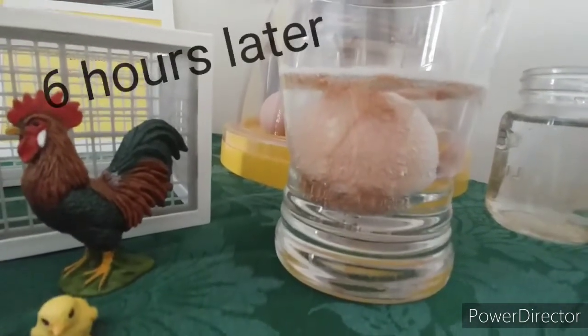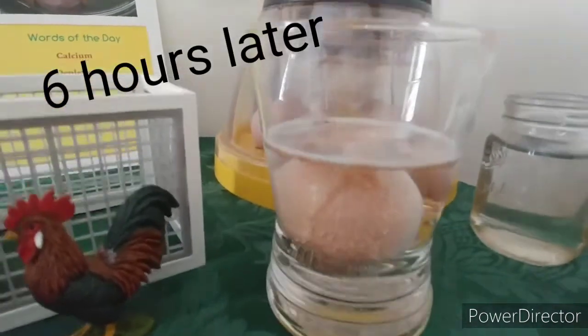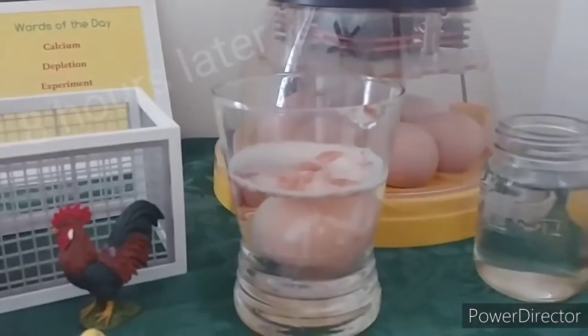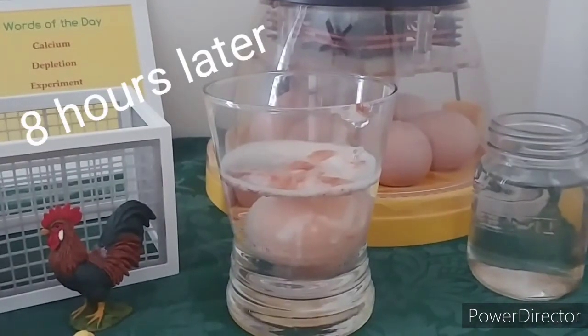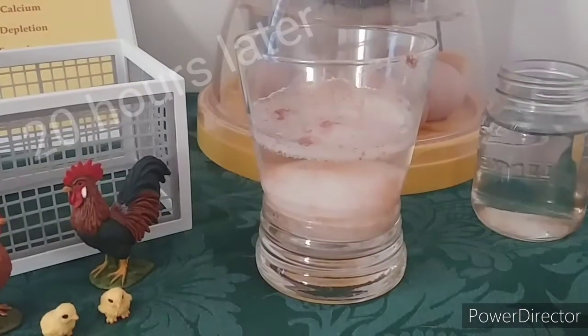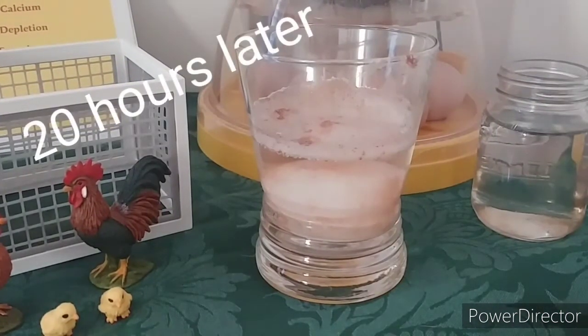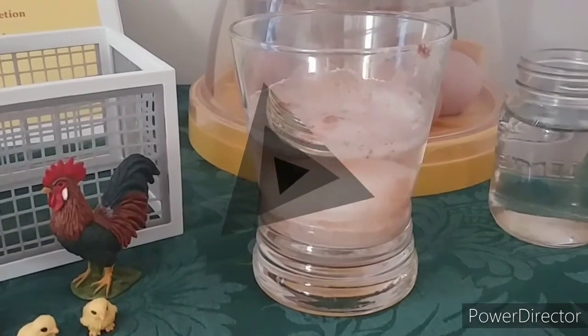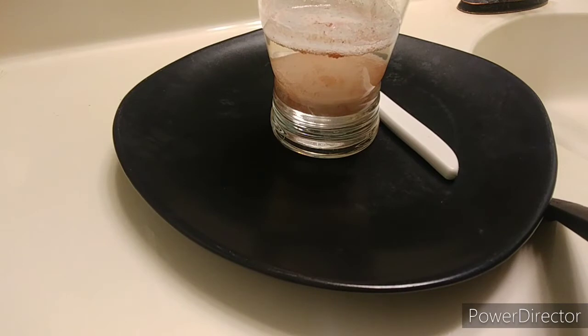But there's still white part underneath. Look, you can see the white underneath the brown. Almost all of the brown is off the egg now, but it's still hard.